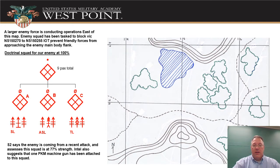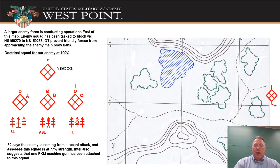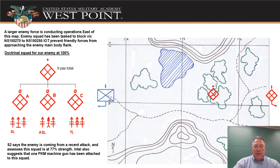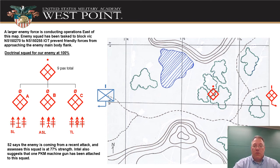Here's the scenario I'm giving you. The map can be downloaded on the entry pass folder in full 8.5 by 11 size. Basically, there's a large enemy force somewhere off to the east off this map. There's a squad that's been tasked to block in the vicinity along the 15 grid line between the two hills, to prevent friendly forces coming from the west — that's our platoon coming through the avenue of approach between the two hills.